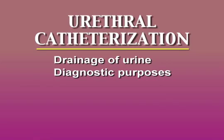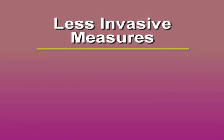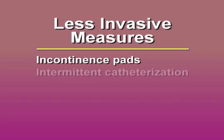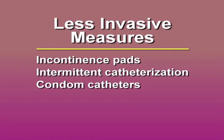Catheters should not be used for the routine management of urinary incontinence. If feasible, less invasive measures such as incontinence pads, intermittent catheterization, or condom catheters should be used in order to avoid the complications of indwelling catheterization.